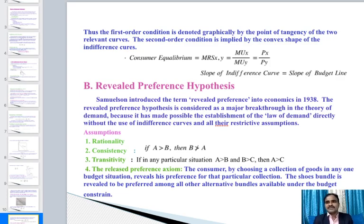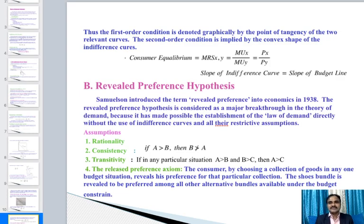Consumer equilibrium is where MRSxy = MUx/MUy = Px/Py — the slope of the indifference curve equals the slope of the budget line. This is where the consumer gains maximum satisfaction given prices and income.